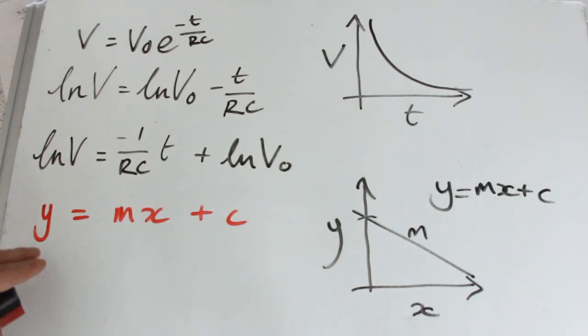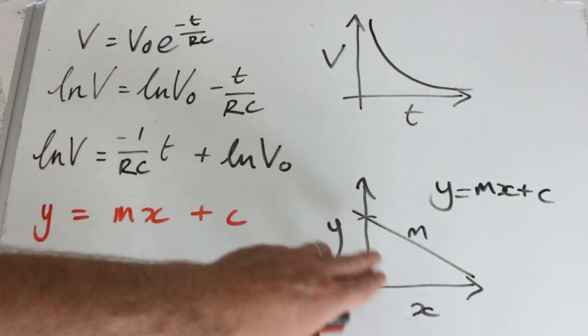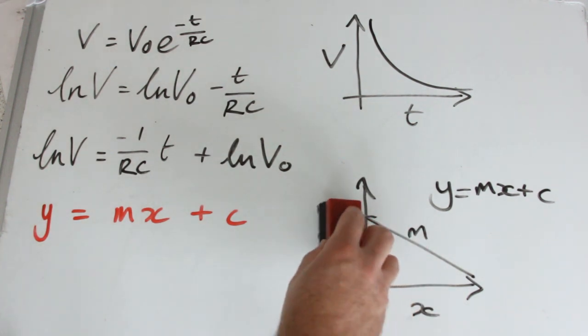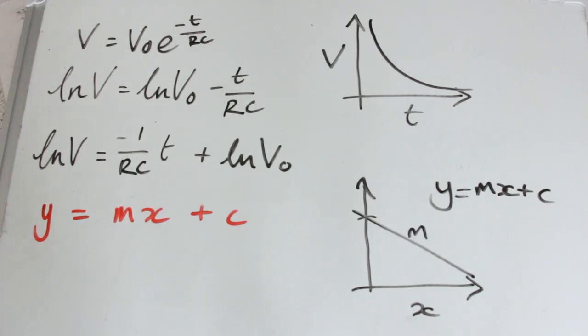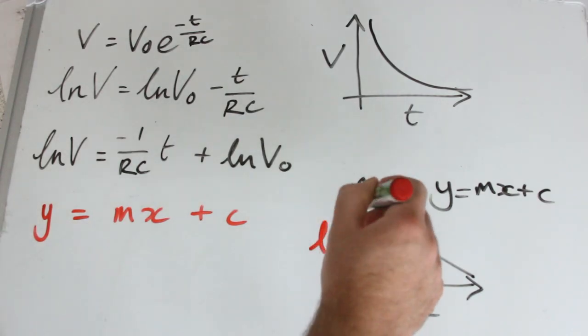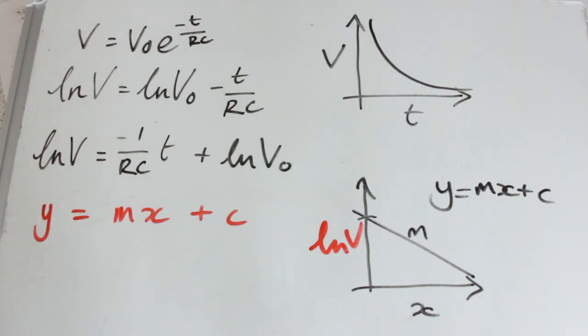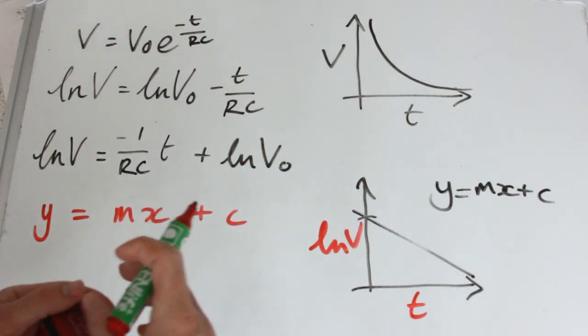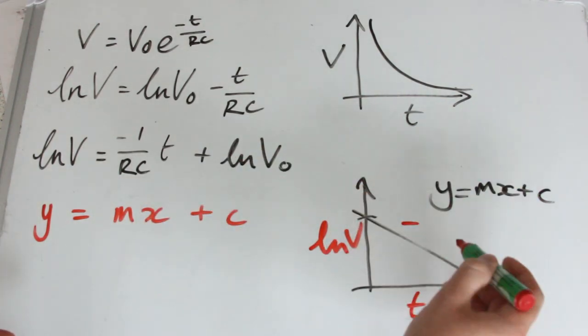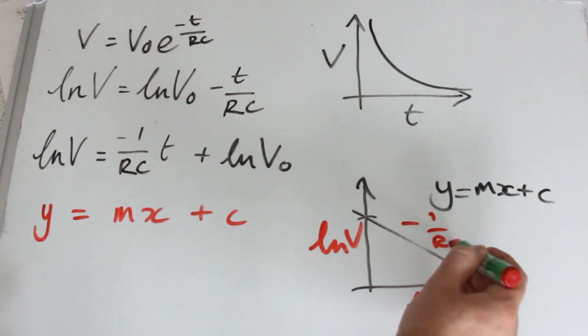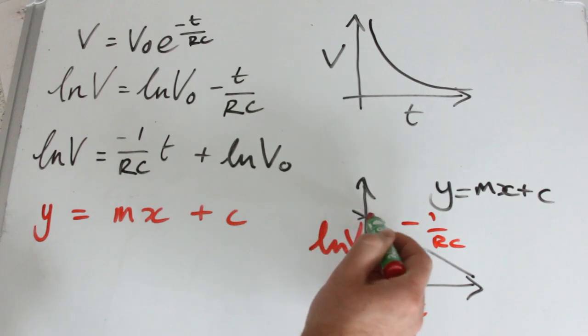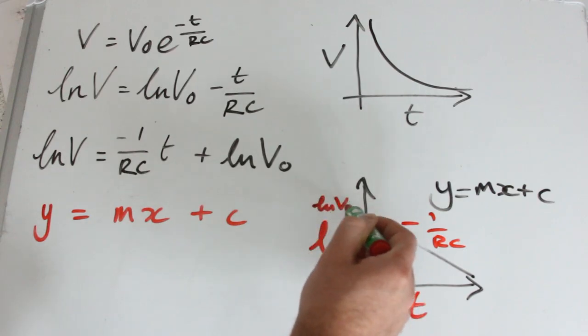So now, hopefully I can just replace these letters on my model curve here, my straight line that I've resolved for. Replace Y with ln V, replace X with T, and our gradient with minus, because it's a negative gradient, 1 over RC. And lastly to say that the Y intercept is ln V0.